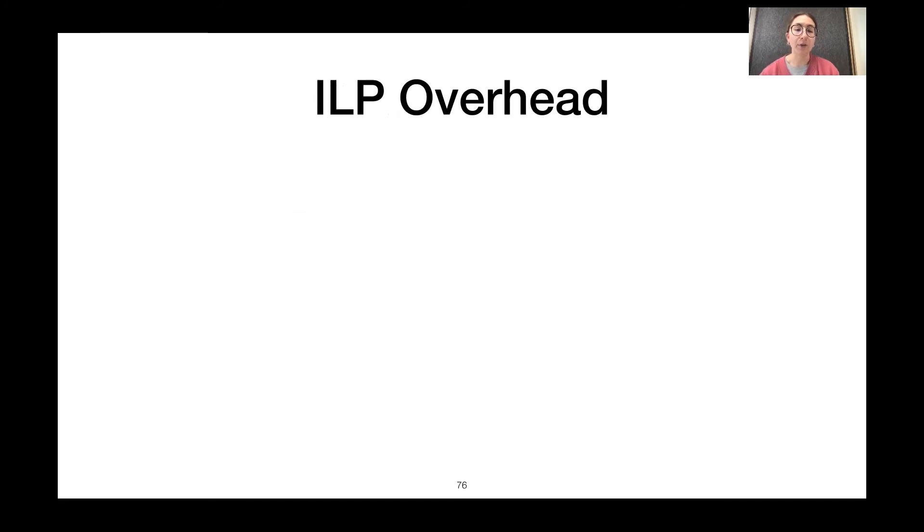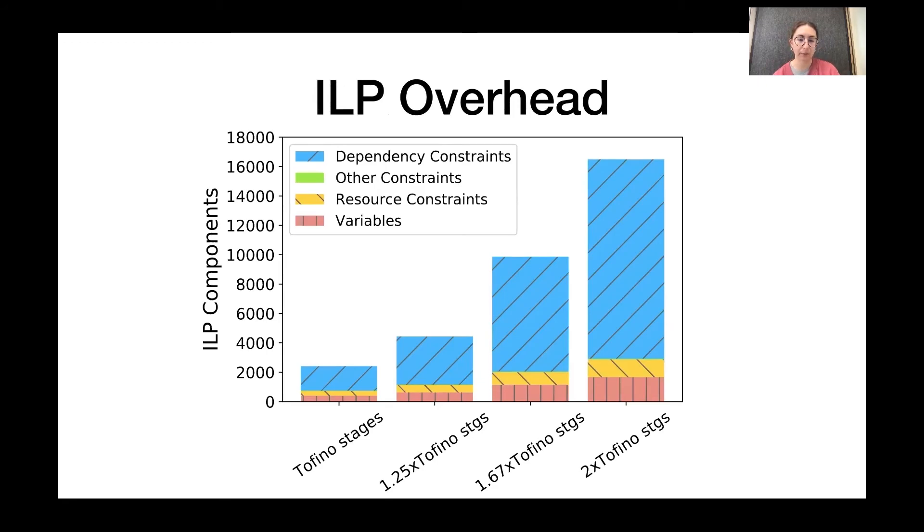And we also measured the overhead of our ILP. So, we used the symbolic count sketch to measure this. And we varied the number of resources available on the target. So, on our x-axis is the number of stages available. And we do this in relation to the number of stages available on the Tofino switch. And the y-axis is the number of components in our ILP. This is a sum of the number of constraints and variables. So, as we can see, as the number of stages on the target increases, so does the size of the ILP. And the time it takes to solve the ILP also increases. So, when our target had the same number of stages as the Tofino, it took about 1.8 seconds to compile an elastic count sketch. And when we doubled the number of stages, it took about three and a half minutes. So, we expect, as the hardware improves and has more resources, we expect that P4All will still have an acceptable compile time.